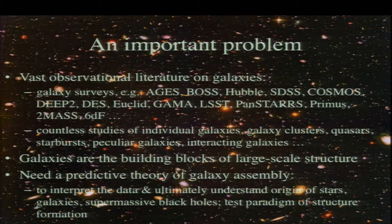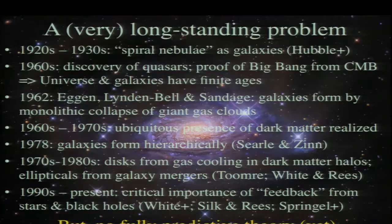In that sense, galaxies are the building blocks of the large-scale structure. To make sense of all this data and to relate what we see in galaxies to how the large-scale structure came about, we need a large predictive theory of galaxy assembly—to interpret this data and understand how stars and quasars originate, how supermassive black holes grow and form, and to test our basic theory for structure formation.